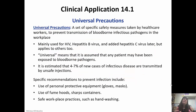Universally speaking, there is a set of specific safety measures that must be taken by healthcare workers because there are a lot of blood-borne infectious pathogens out there. This is mainly for HIV, hepatitis B, and hepatitis C viruses, but also applies to others. Universal means it's assumed that any patient may have been exposed to blood-borne pathogens. It's estimated about four to seven percent of new cases of infectious disease are transmitted because of unsafe injections, so these protocols are really important to follow.